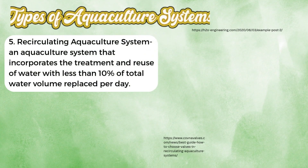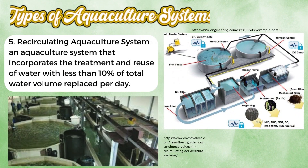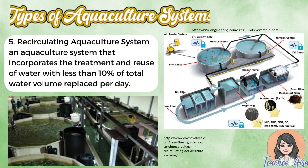Lastly, there is the Recirculating Aquaculture System, or RAS. In this modern method, water is filtered, treated, and reused, with less than 10 percent replaced daily. It is very efficient, environmentally friendly, and suitable for areas with limited water supply. Each of these systems has its own advantages and is chosen based on the environment, the species to be cultured, and the resources available.